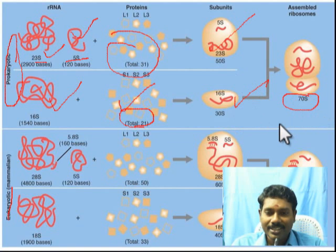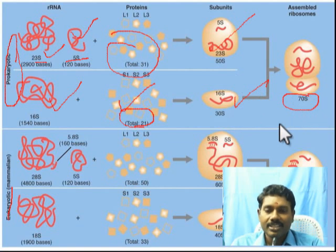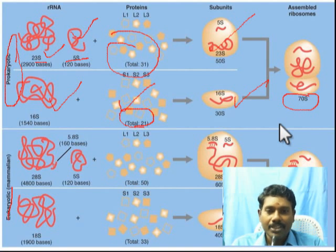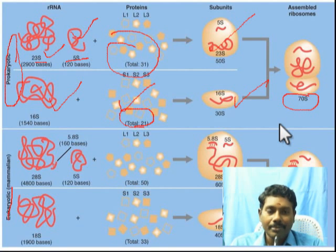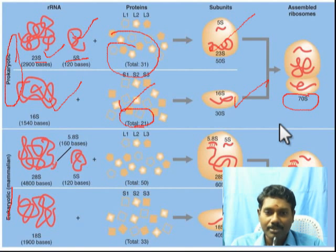Prokaryotes are simple unicellular organisms. Prokaryotic ribosomes are found in organisms without a nuclear membrane — especially bacteria. In bacteria, there is no nuclear membrane and no demarcation between cytoplasm and nucleus.